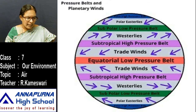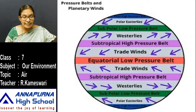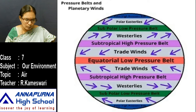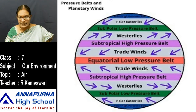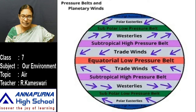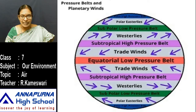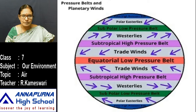A wind is named after the direction from which it blows. That is about our major pressure belts and wind system — all the winds are blowing from high pressure areas to low pressure areas, as shown in this diagram.